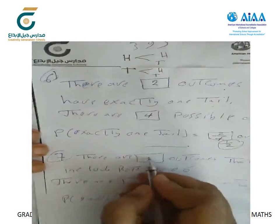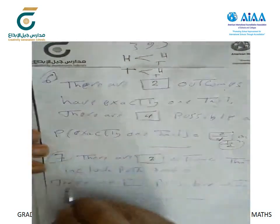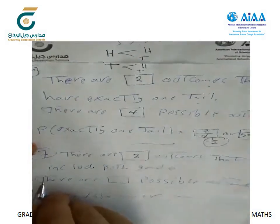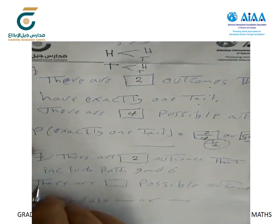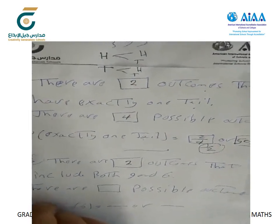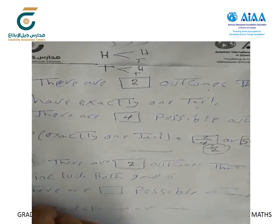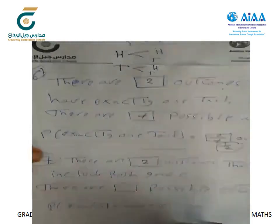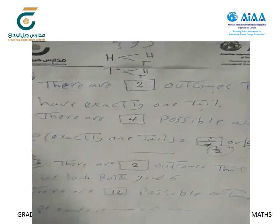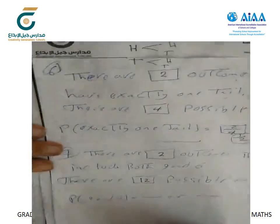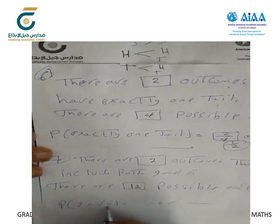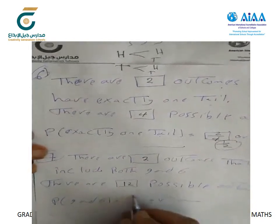The total number of possible outcomes equals twelve. So the probability of getting both nine and six equals 2/12, which simplifies to 1/6.